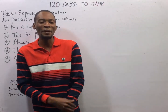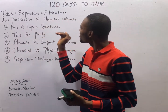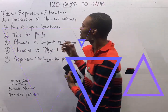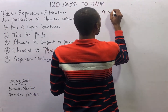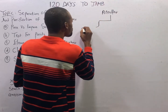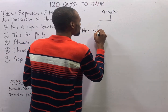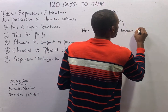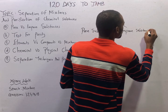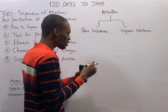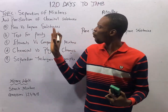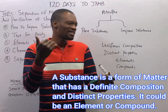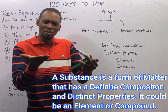The first thing jam expects you to know in chemistry is separation of mischiefs and purification of chemical substances. Matter is divided into pure substances and impure substances. Any time you hear substance, elements or compounds should come to your mind.